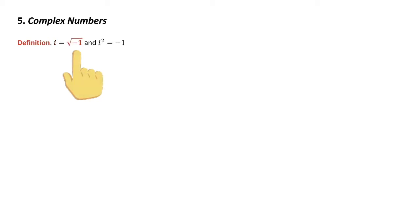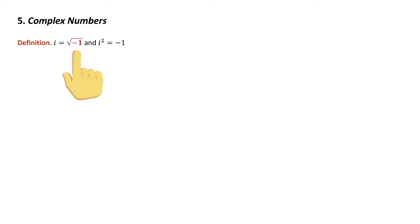i is the square root of minus one. It doesn't really mean anything — it's just a placeholder. And to add insult to injury, because we have real numbers, we're going to call these imaginary numbers — and we wonder why people laugh at mathematicians. i for imaginary number, i is the square root of minus one.